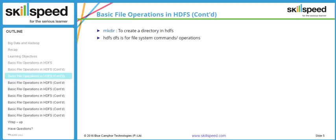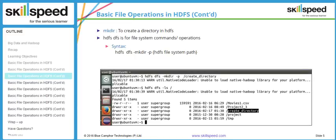The initial part starting with hdfs dfs is going to be the same for all these commands. HDFS means we are invoking a command related to the Hadoop distributed file system, and DFS means we want to do a file operation. To create a new directory, type: hdfs dfs -mkdir -p /root followed by the directory name. You have to give the complete path where you want to create a directory. Here I typed /root/create_directory. After completing the command and typing hdfs dfs -ls, the new directory has been created, highlighted as create_directory.